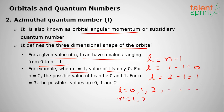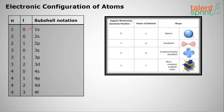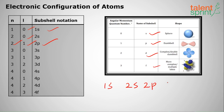As stated, n equal to 1 means l equal to 0, which is the 1s subshell. n equal to 2, l equal to 0 gives 2s, and l equal to 1 gives 2p. The shape of the s orbital is spherical, the shape of the p orbital is dumbbell, the shape of d is a complex double dumbbell, and f is even more complex with more lobes. Then we have 1s, 2s, 2p, 3s, 3p, 3d — for every principal level one extra subshell type is added.